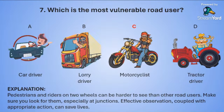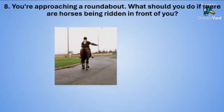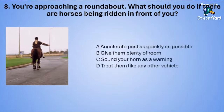Question number eight: You are approaching a roundabout. What should you do if there are horses being ridden in front of you? A: accelerate past as quickly as you can. B: give them plenty of room. C: sound your horn to give them a warning. Or D: treat them like any other vehicle.